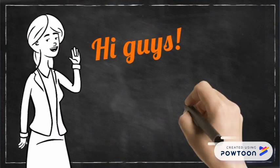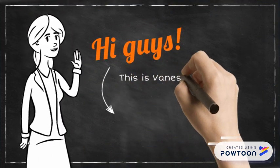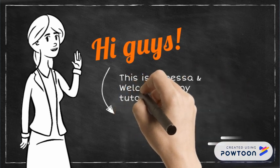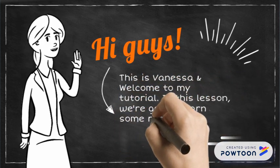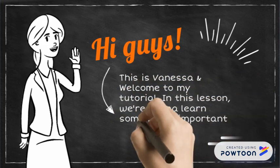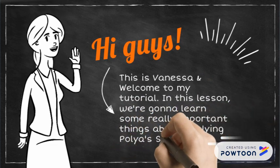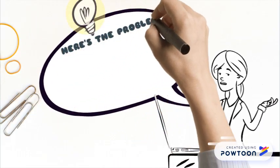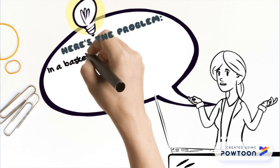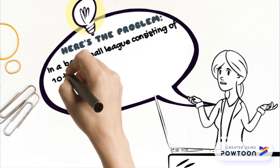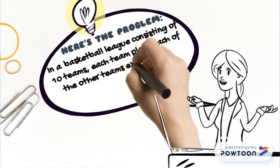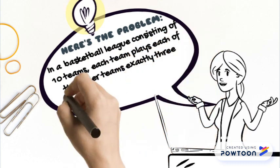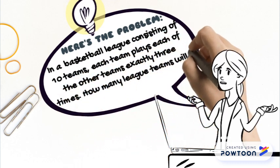Hi guys, this is Vanessa and welcome to my tutorial. In this lesson we're going to learn some really important things about applying Polya's strategy. Here's the problem: in a basketball league consisting of 10 teams, each team plays each of the other teams exactly three times. How many league games will be played?